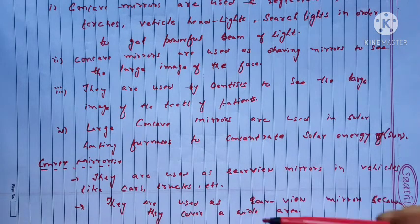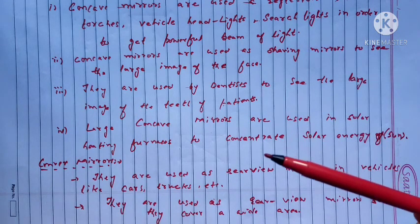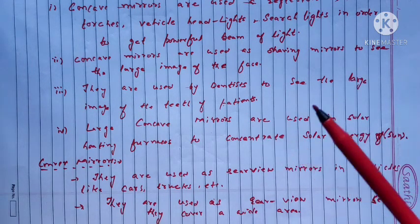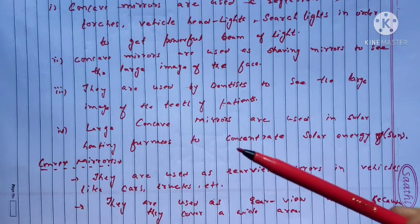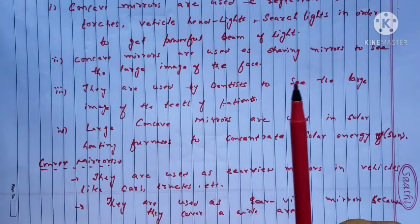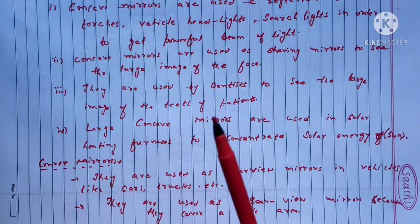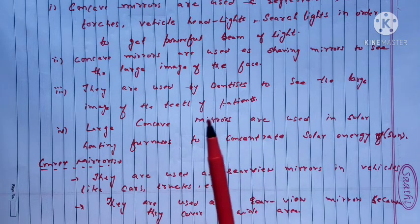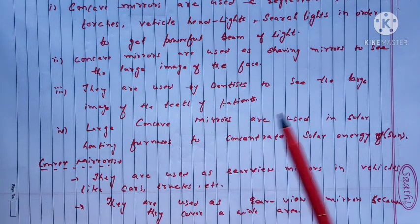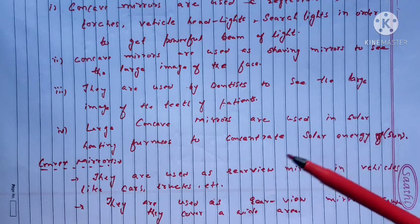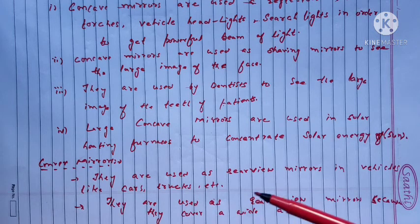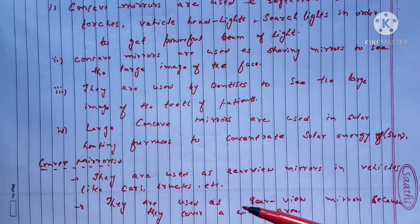So these were the various uses of concave and convex mirrors: concave mirrors are used in torches, vehicle headlights, and searchlights to get a powerful beam of light; as shaving mirrors to see a large image of the face; by dentists to see a large image of the teeth of patients; in solar heating furnaces to concentrate solar energy. Convex mirrors are used as rear-view mirrors in vehicles like cars and trucks because they cover a wide field of view.